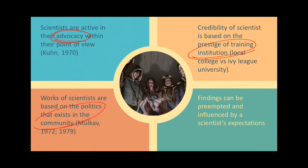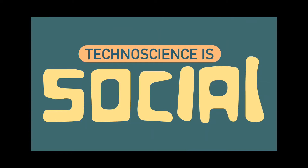Findings can also be preempted by the scientist's expectations. Although there are many techniques — including mathematical methods — to distance oneself from findings, and ways to ensure findings aren't influenced by one's own values, mathematics can also have biases. With all the arguments presented in this video, we can agree with a certain degree of confidence that technoscience is a social phenomenon — that the scientific community and every scientist within it are influenced by many social forces. In the next video, we'll talk about the political forces that influence scientists and science communities.